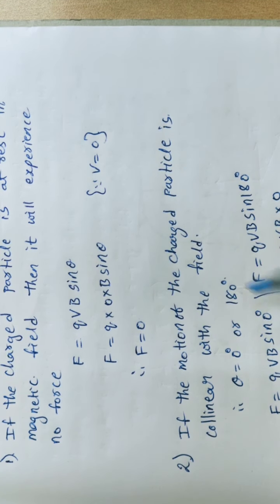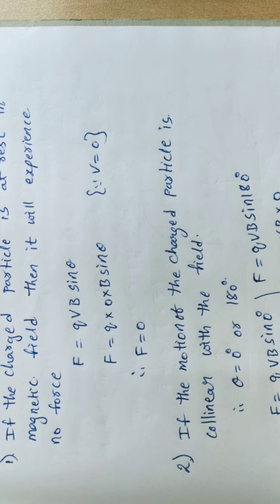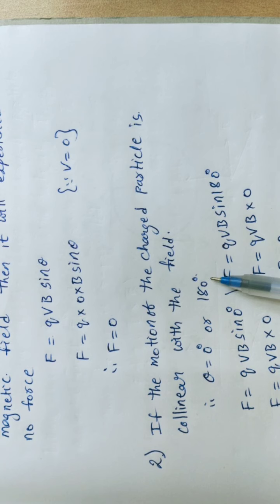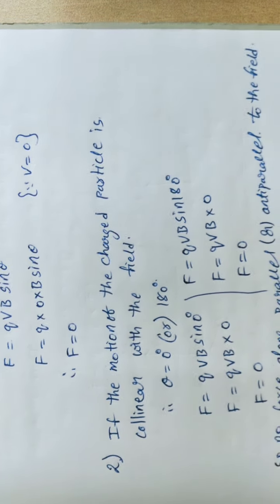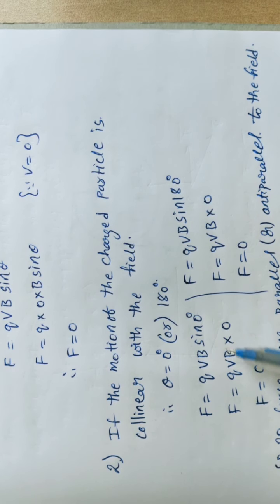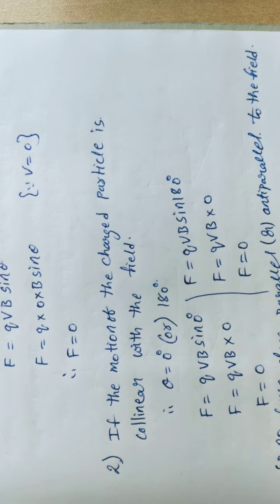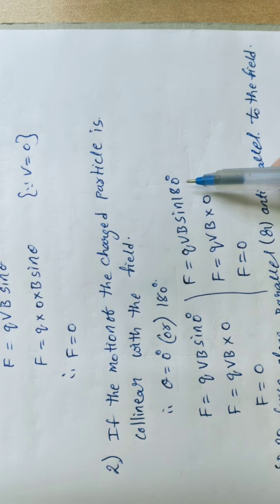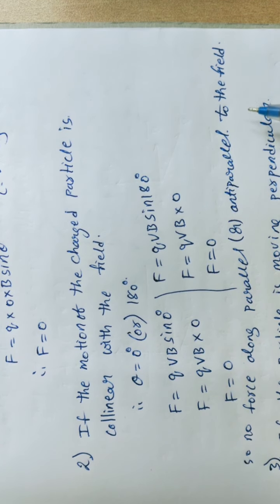Case 2: If the motion of the charged particle is collinear with the field — parallel (theta = 0°) or anti-parallel (theta = 180°) — then: For theta = 0°, F = QVB sin0° = QVB × 0 = 0. Similarly, for theta = 180°, F = QVB sin180° = QVB × 0 = 0. So no force acts when the particle moves parallel or anti-parallel to the field.